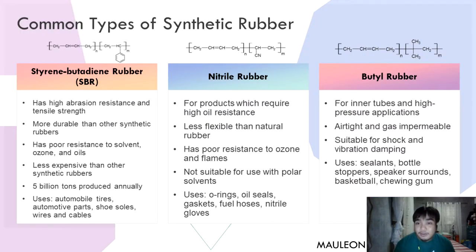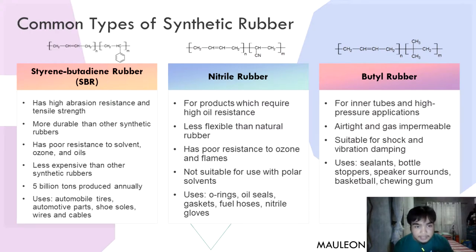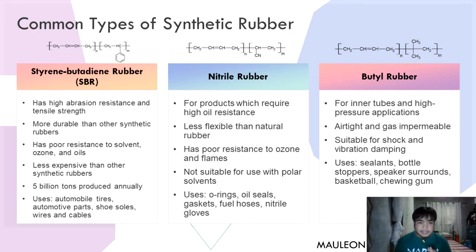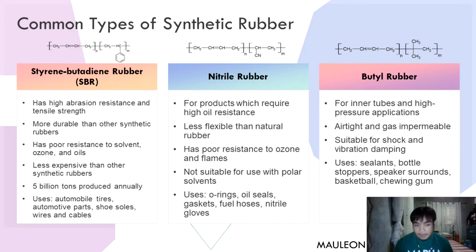For common types of synthetic rubber, we have styrene butadiene rubber or SBR. It has high abrasion resistance and tensile strength and is more durable than other synthetic rubbers, although it has poor resistance to solvents, ozone, and oils. It is less expensive than other synthetic rubbers, with 5 billion tons produced annually, and is commonly used in automobile tires, automotive parts, shoe soles, wires, and cables.